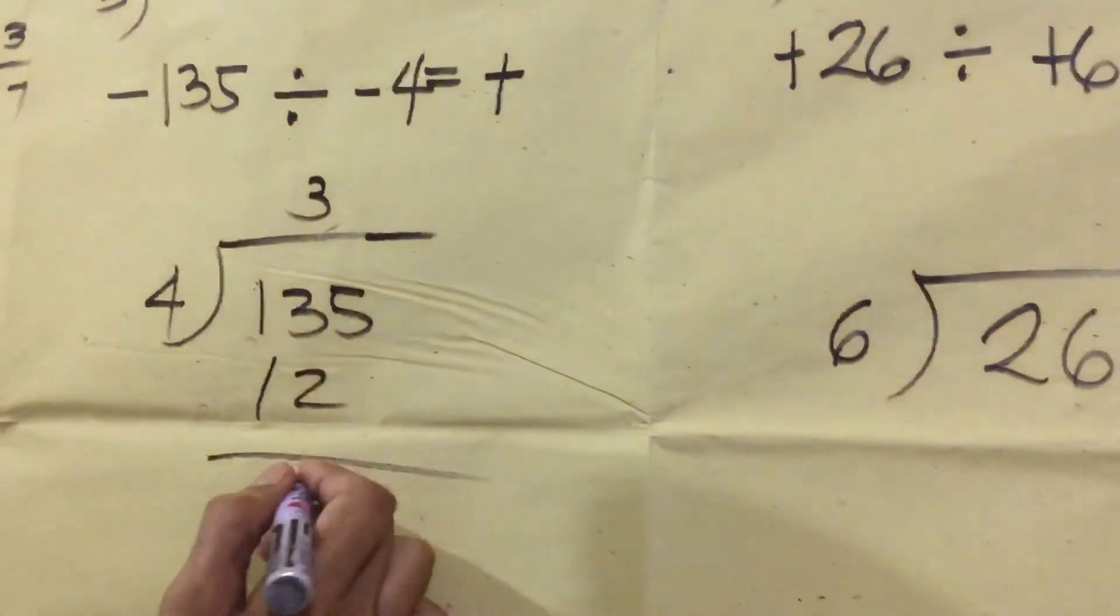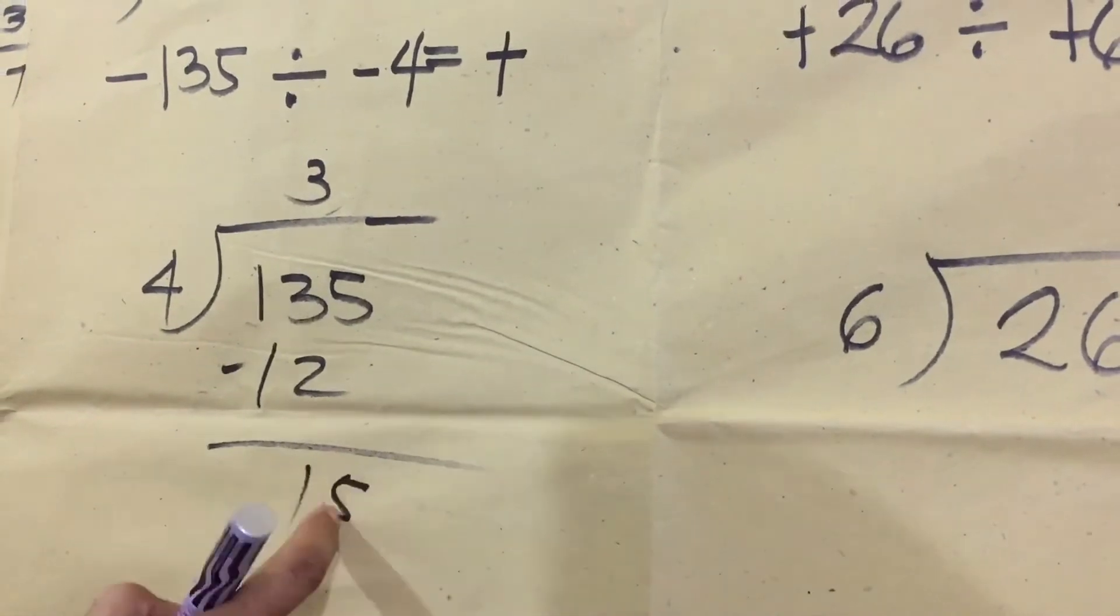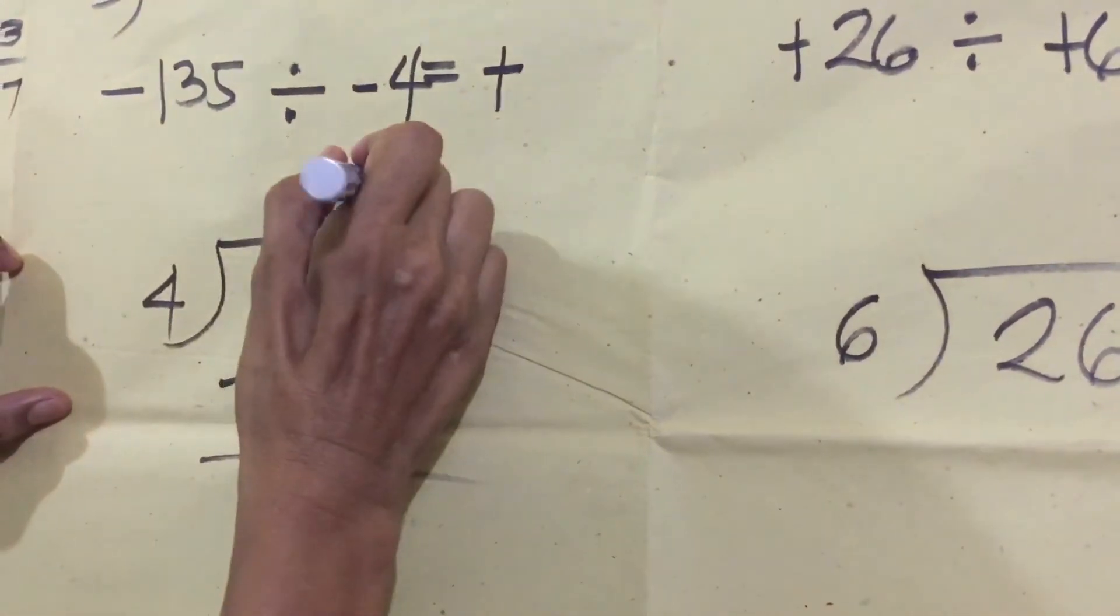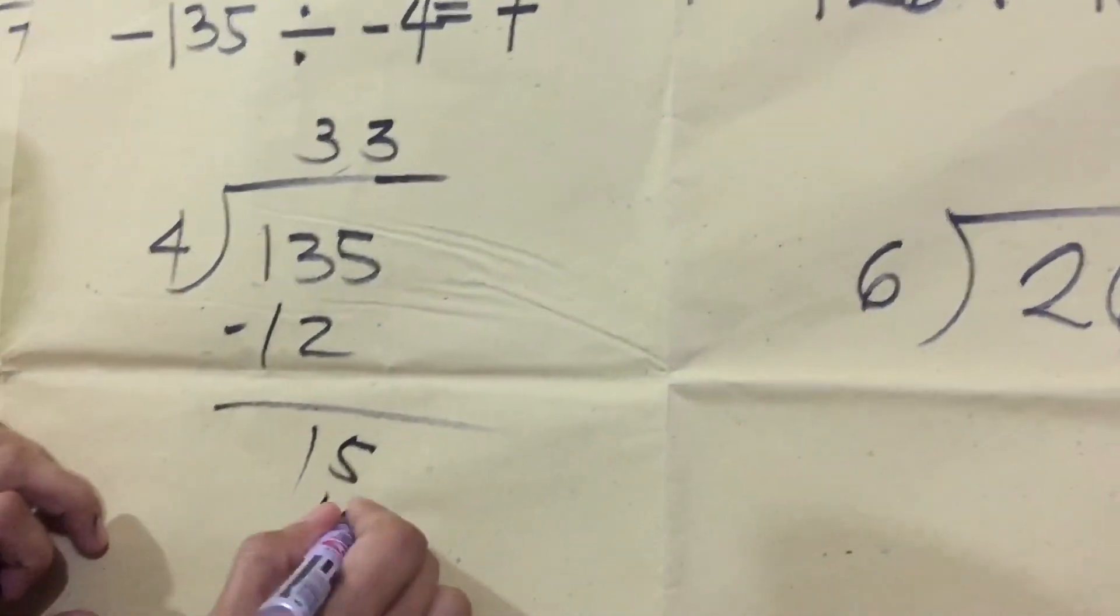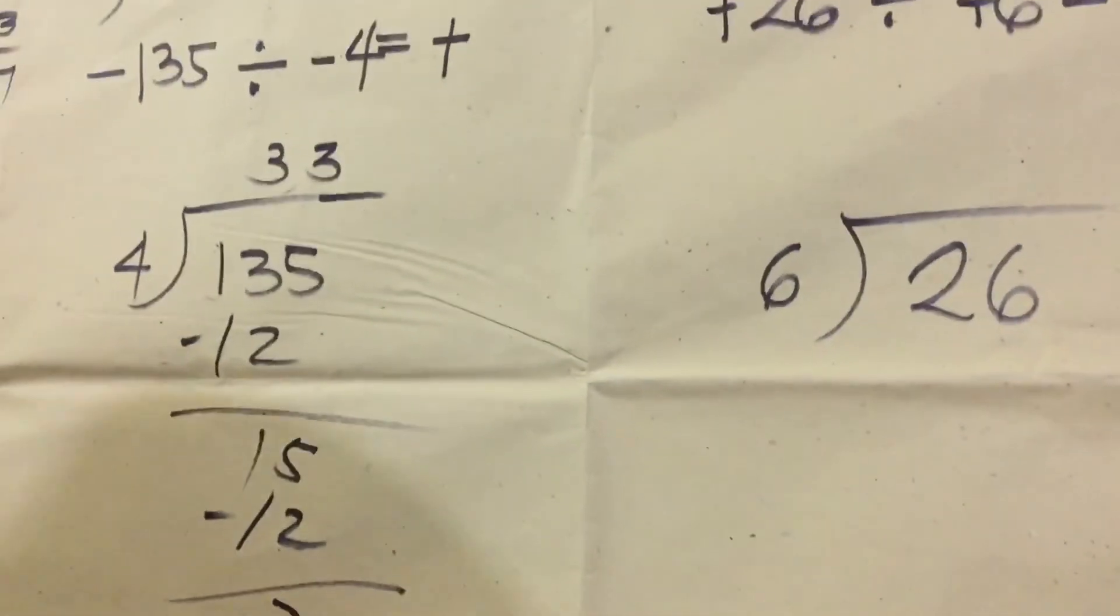12 minus, we have 1. Bring down 5. 15 divided by 4, we have also 3. 3 times 4, we have 12. Minus 3 is the difference.